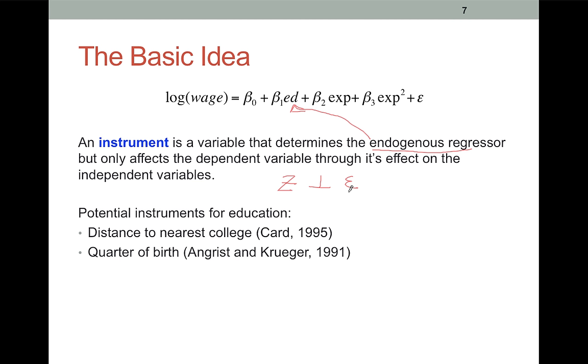Now, let's think about a couple examples. Does distance to the nearest college, at least in part, determine how much education someone gets? Sure. People who grow up close to a college are more likely to go because the cost is lower. Now what about the second key part of a good instrument? Does distance to the nearest college have an effect on an individual's wage that doesn't go through education or experience? Well, maybe, maybe not. If we think labor markets in areas with universities are substantially different from areas that don't have universities, then distance to the nearest college is a poor instrument. If we think those labor markets are pretty similar, well then maybe the instrument is okay.